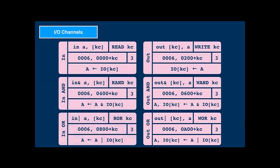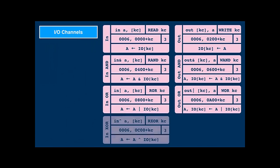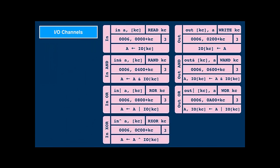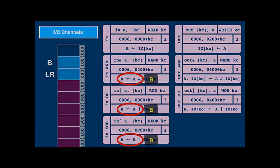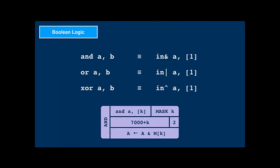To make Boolean operations also usable between registers, channels 1 and 2 are actually aliases of the B and LR registers, which allows for these instructions. For AND, there's also a dedicated instruction that works on A and memory.